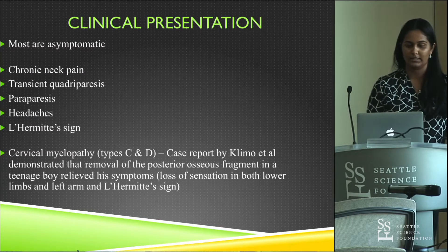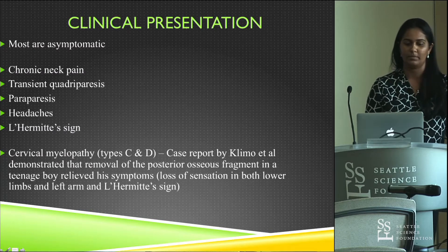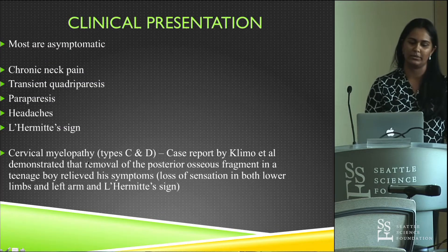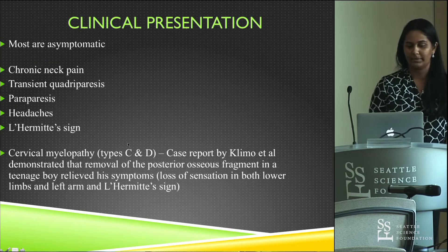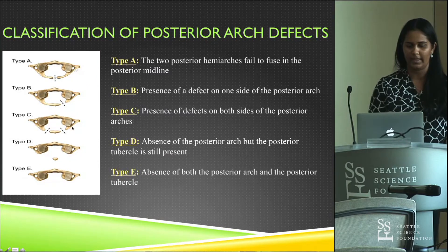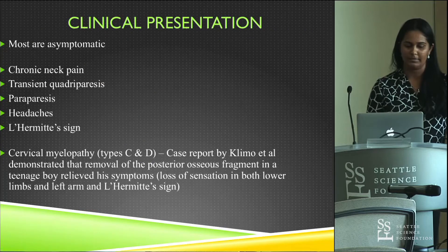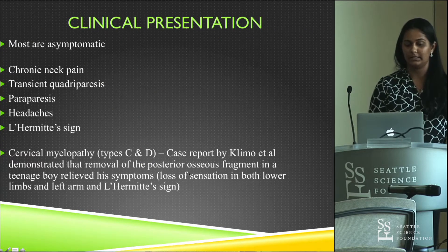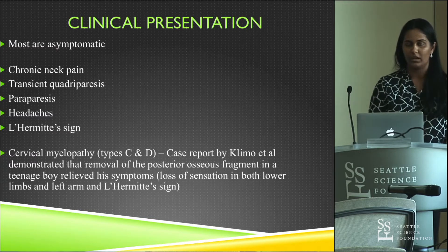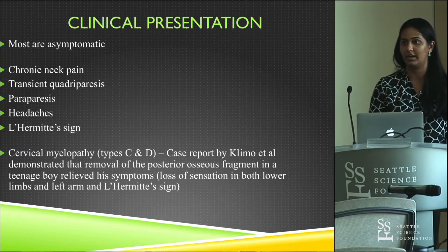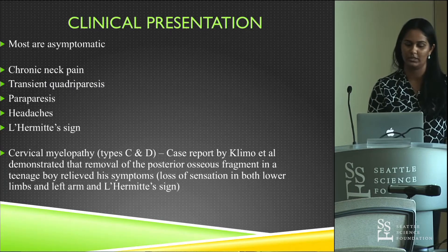In traumatic cases, patients could present with chronic neck pain, neurological symptoms like quadriparesis, paraparesis, headaches, and Lhermitte's sign. Types C and D are clinically significant because they contain an isolated posterior osseous fragment or posterior tubercle. When the patient extends their neck, this fragment can displace forward and interact with the spinal cord, producing neurological symptoms.